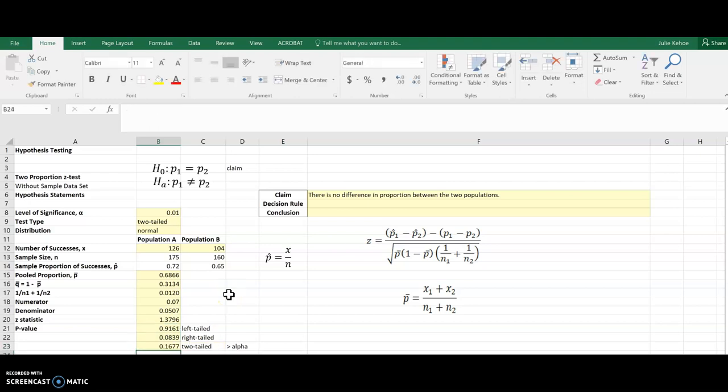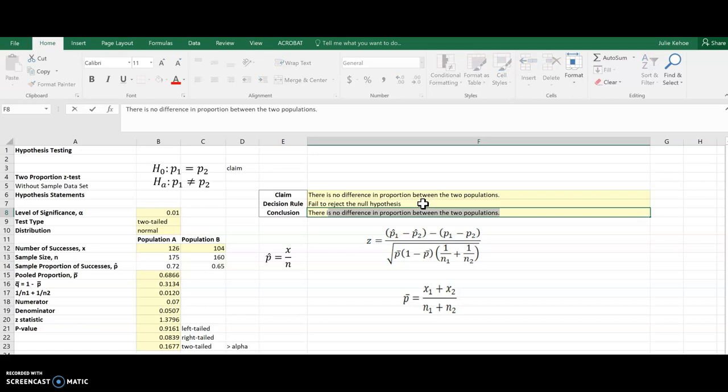And so if I compare that to my level of significance, well this is definitely bigger than 0.01, so it's greater than alpha. So if I come over to my decision rule, when p is greater than alpha then I fail to reject the null hypothesis. And since our claim is the null hypothesis, it means I can't reject the claim either. So there is not enough evidence to reject the claim.